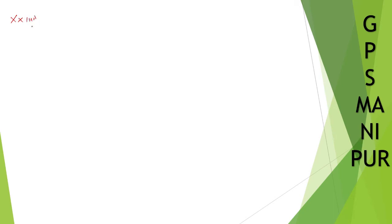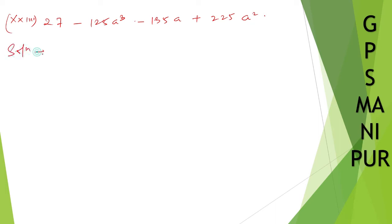Next question is Roman number 23: 27 minus 125a cube minus 135a plus 225a squared. Solution. Here you can write 27 as 3 cube, and 125a cube as (5a) whole cube.